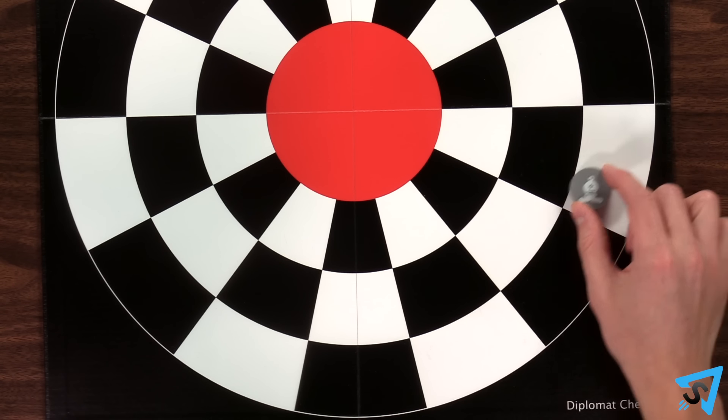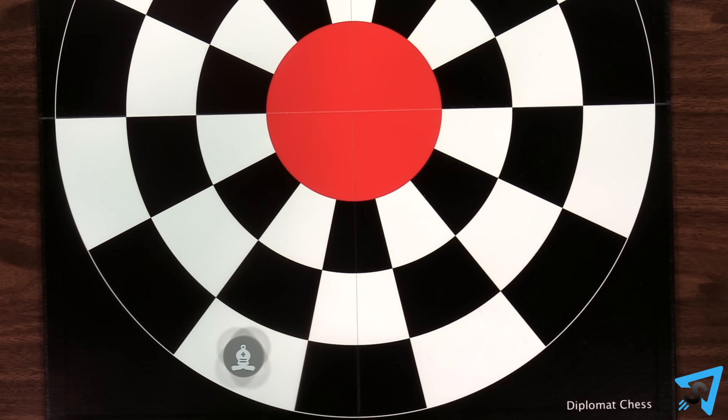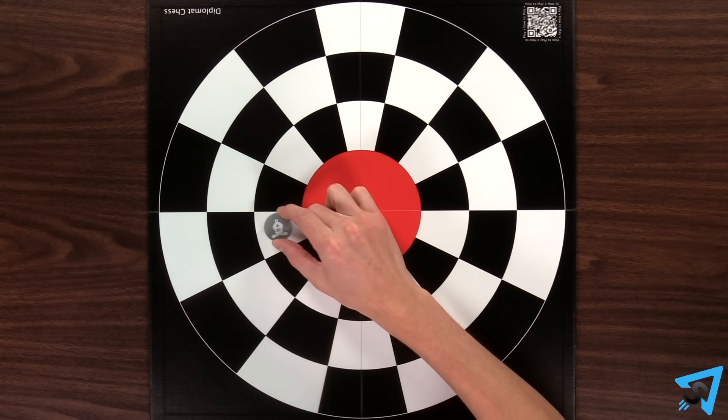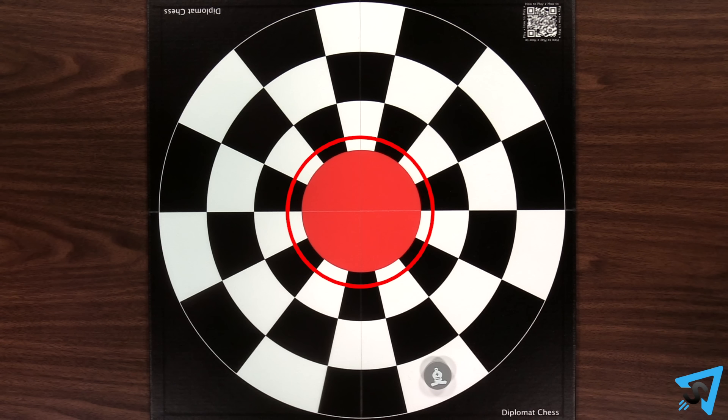The bishop's diagonal movement travels through the opposite corner of the space the piece entered. You may not change directions mid-move. The bishop may travel through the center.